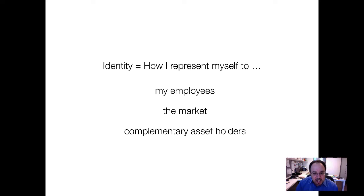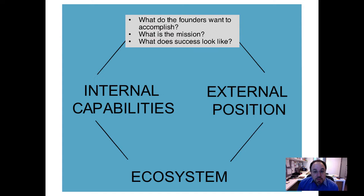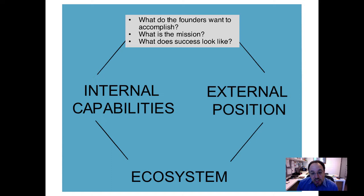That's how you should think about identity. We represent it in four dimensions: founder objective, internal capabilities, external position, and ecosystem. Your founder objective is an overarching choice in identity — a communication of what you as a founder want to accomplish. Are you going to have any social mission, or is everything going to be purely commercial? If you think about Tesla, Tesla was founded on a mission of saving the world from environmental disaster. It need not have been founded that way — it could have been founded just to make another car company. That's a very different choice of identity.